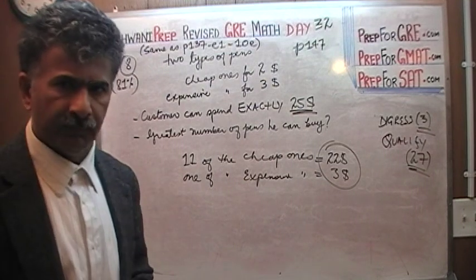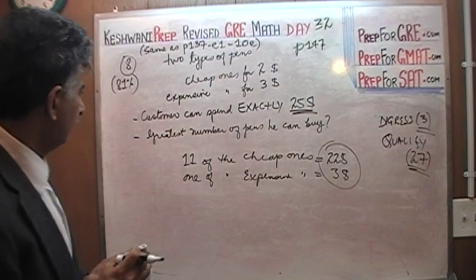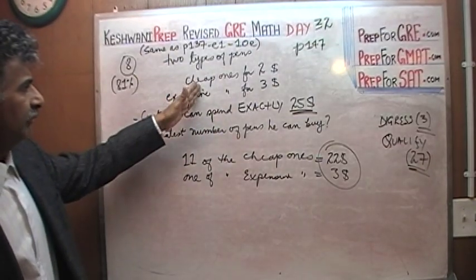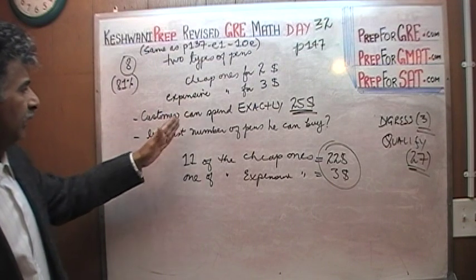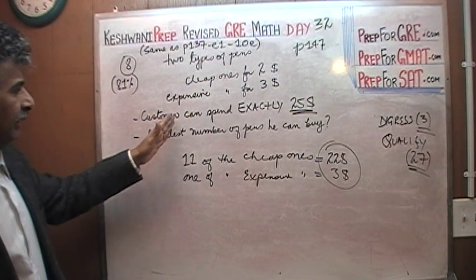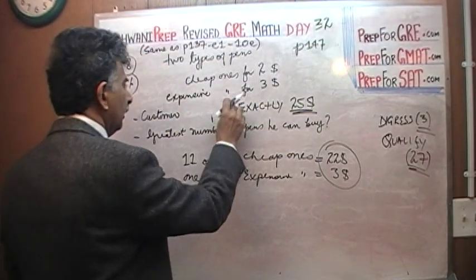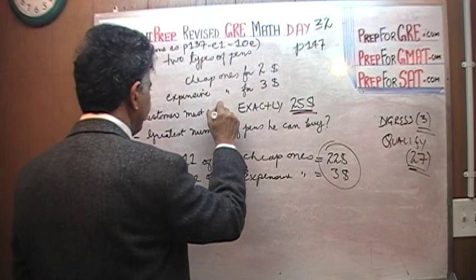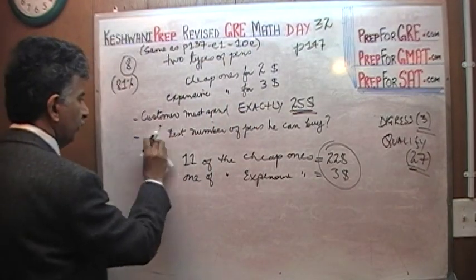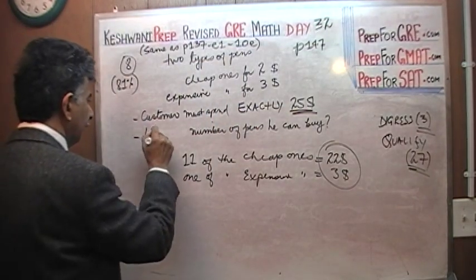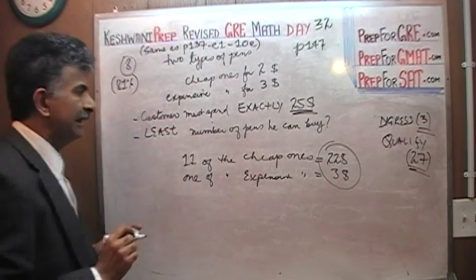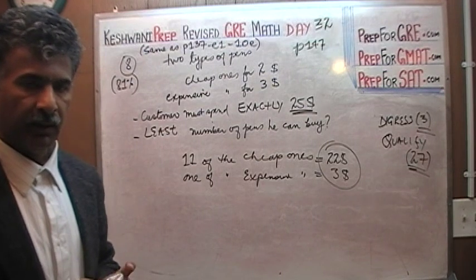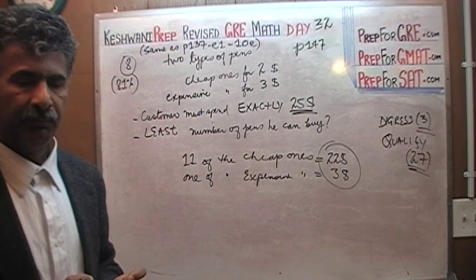Let's do one more question, shall we? We're going to do one more. Listen carefully. Everything stays the same. We have two types of questions. The cheap one for $2, expensive one for $3. Customer must spend exactly $25. And the question now is, what is the least number of pens that you can buy? See if you can do that. Pause the video one more time and do it again. What is the least number of pens can you buy?